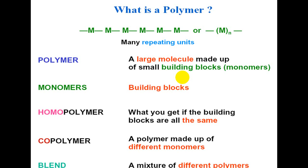On the basis of process, polymers are classified as homopolymer, copolymer, and blends. What is a homopolymer? When all building blocks are the same and they repeat and combine, they form a homopolymer. For example, polythene and PVC are homopolymers.